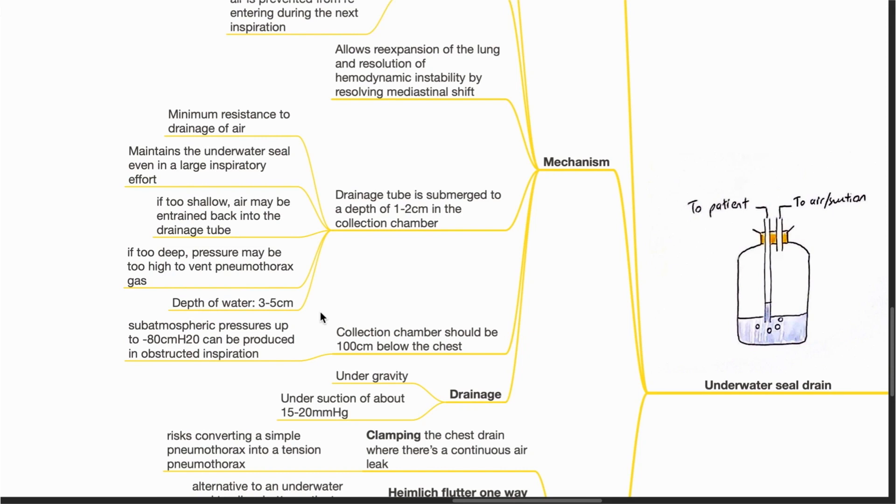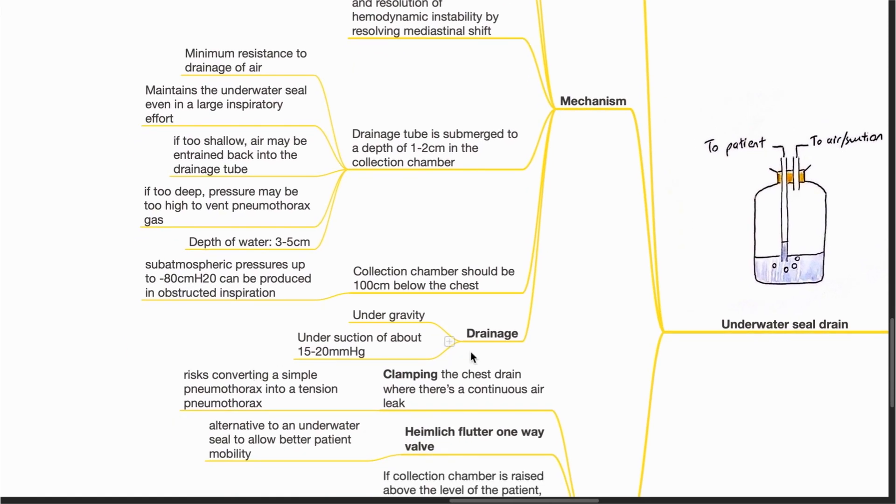The depth of water should be 3 to 5 cm. The collection chamber should be 100 cm below the chest because subatmospheric pressures up to negative 80 cmH2O can be produced in obstructed inspiration. Drainage could be under gravity or via suction of about 15 to 20 mmHg.